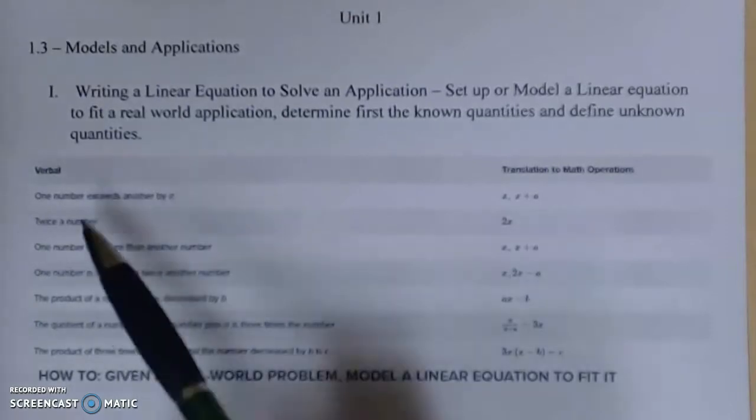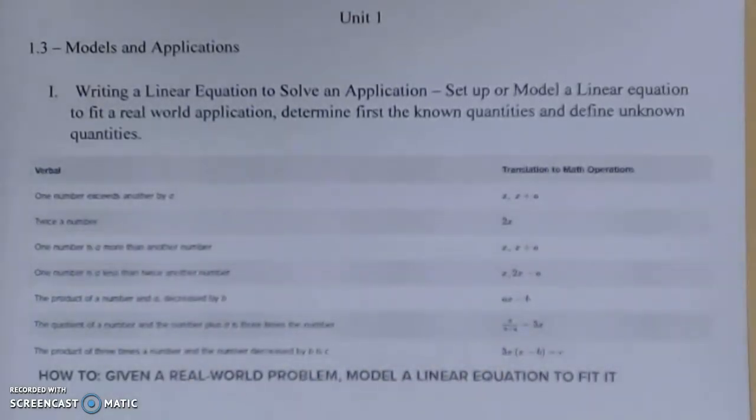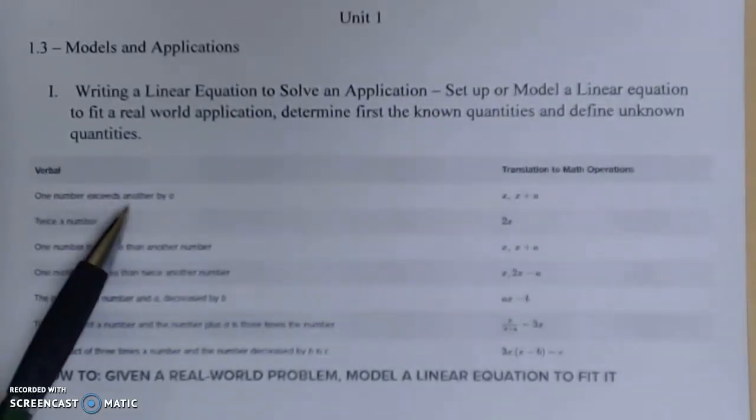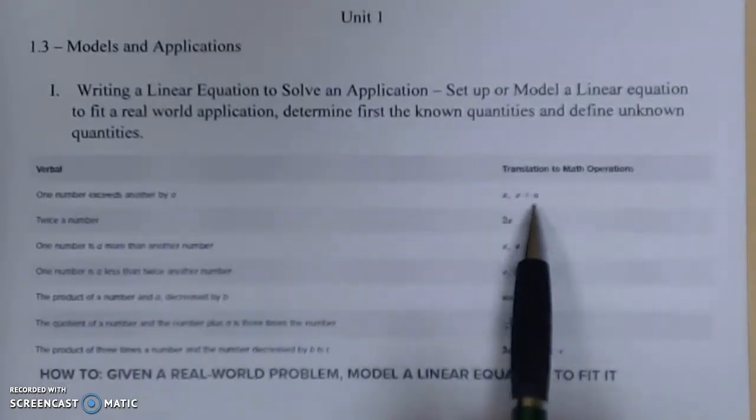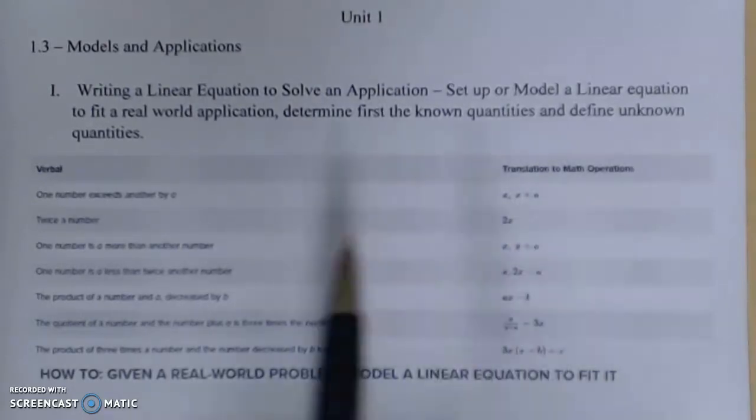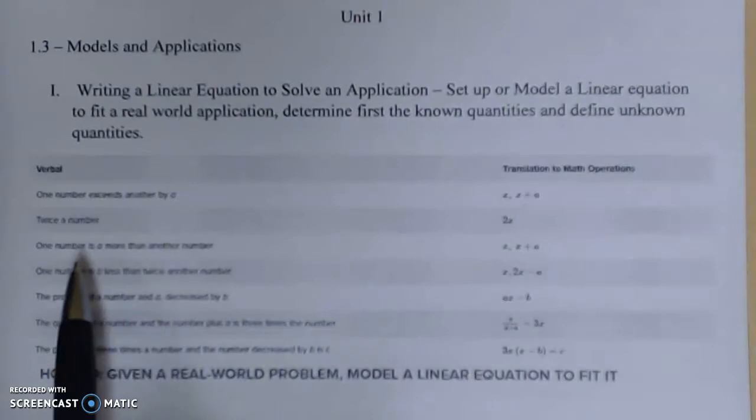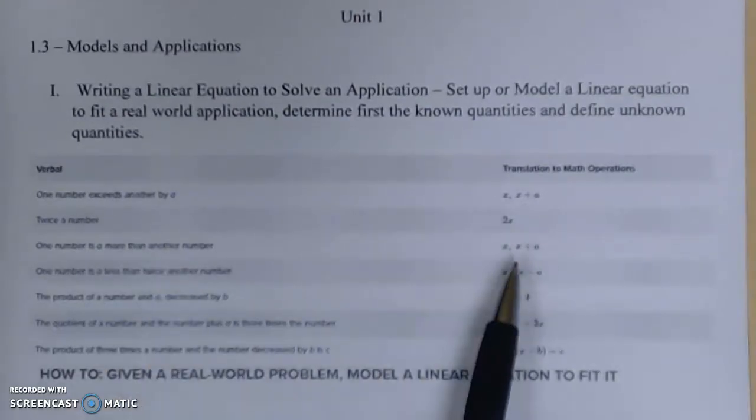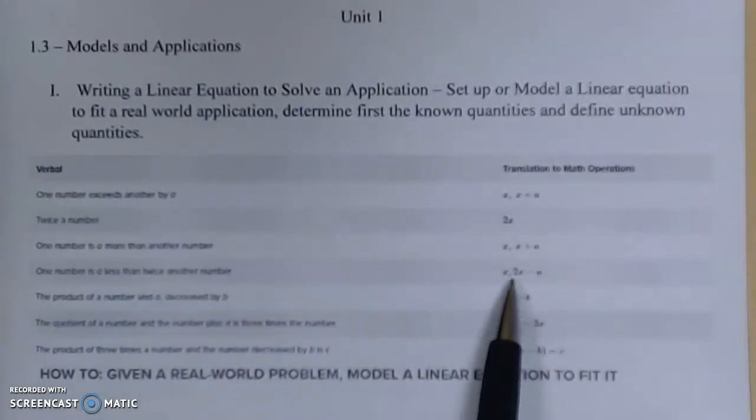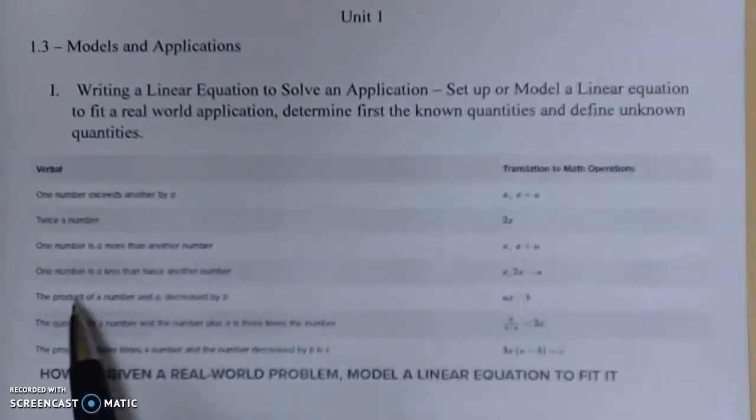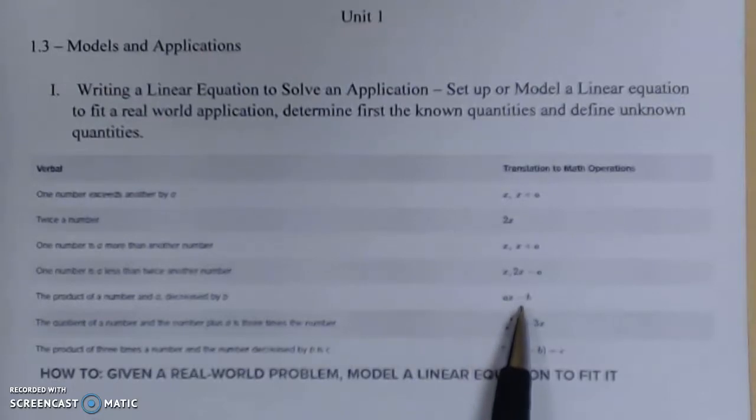I want to include this chart here and this does come from your textbook if you want to reference it there. Just some things to consider. If it says one number exceeds another by a, they're probably considering one number such as x and the other one being added to plus an a value. Twice a number means to multiply. A number is more than another number, that's addition. The number is less than twice a number, that's going to have two times the variable subtracting a value. The product is your multiplier. Decrease, we're looking at multiplication and subtraction. The quotient, that's your division.